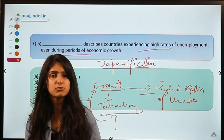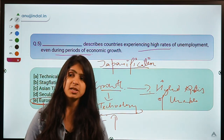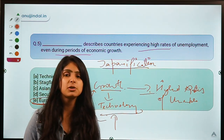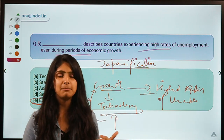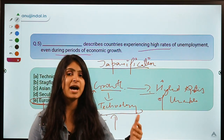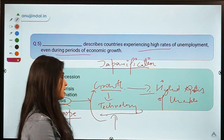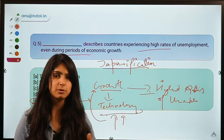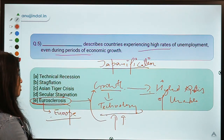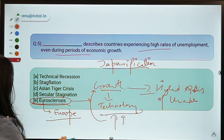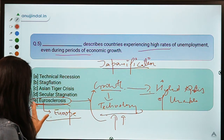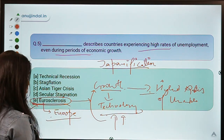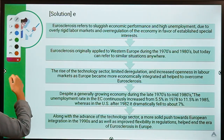Technology removes the need for lower-level or unskilled jobs because monotonous and menial tasks can be done by technology easily, and then creates jobs for high-skilled people. If a country has growing use of technology but people are not able to upgrade their skills to attain those high-level jobs, then unemployment is going to rise. This was a situation Europe experienced, and now Eurosclerosis has become a generic term for any country facing a similar situation.